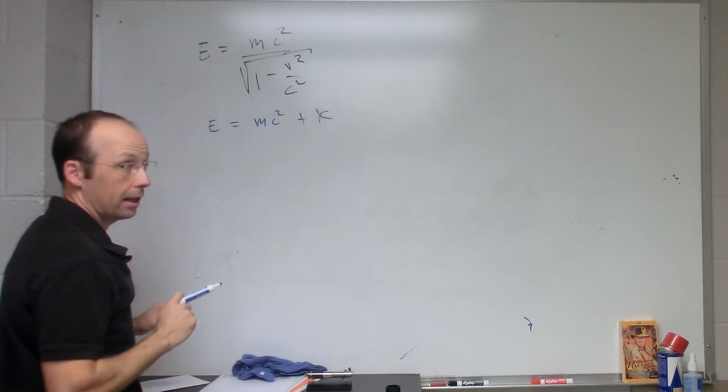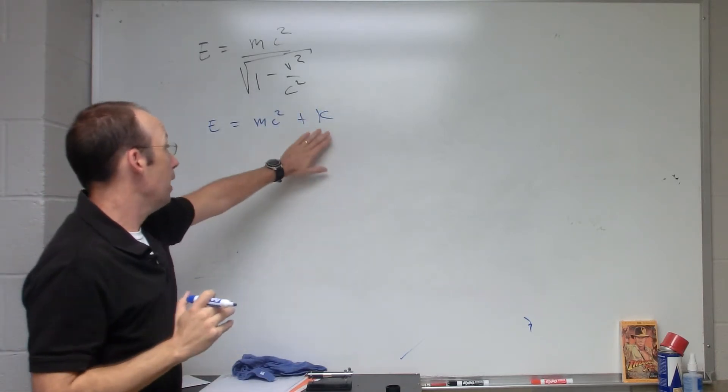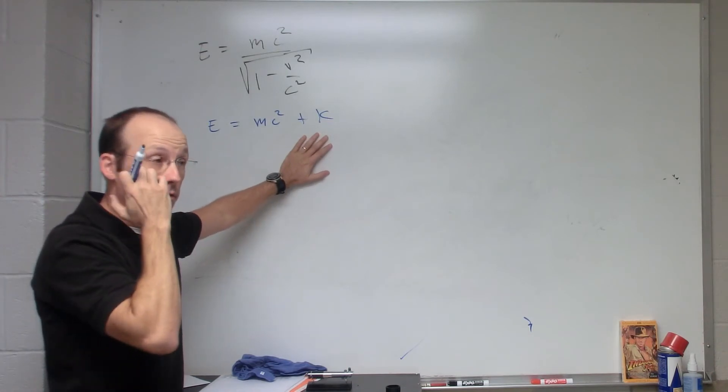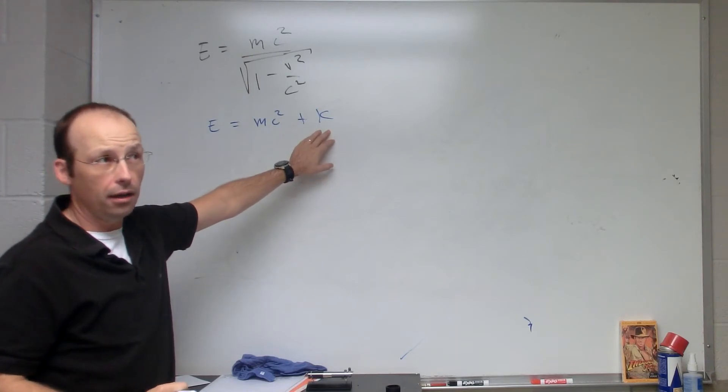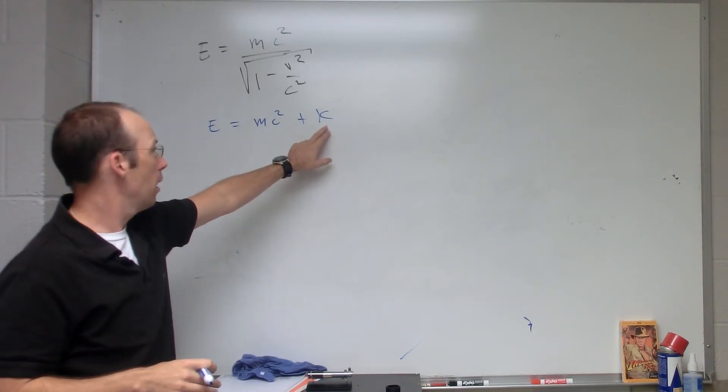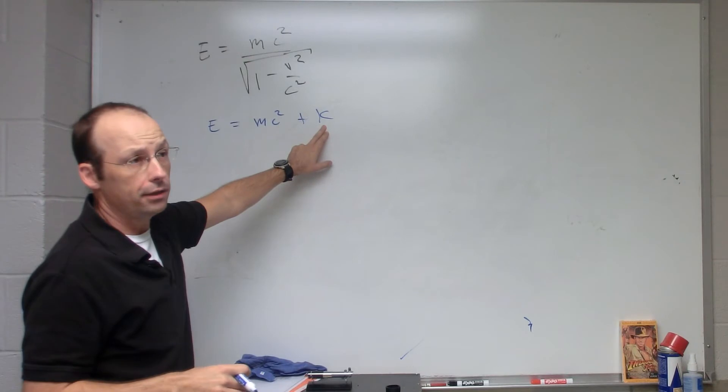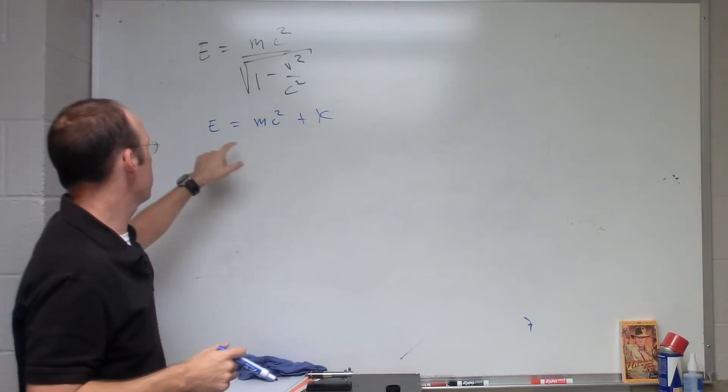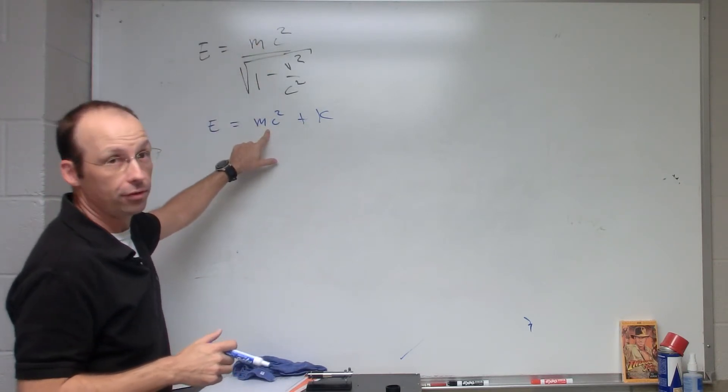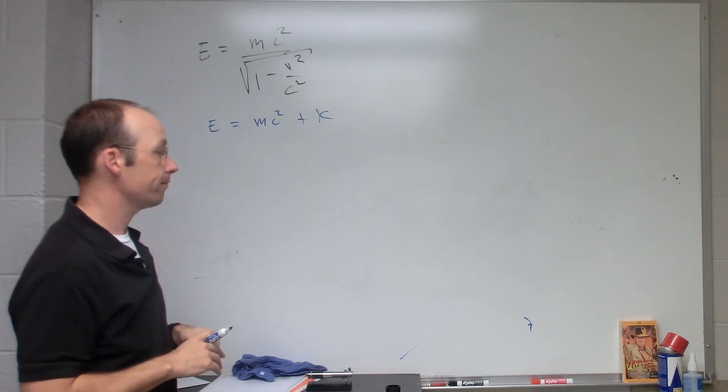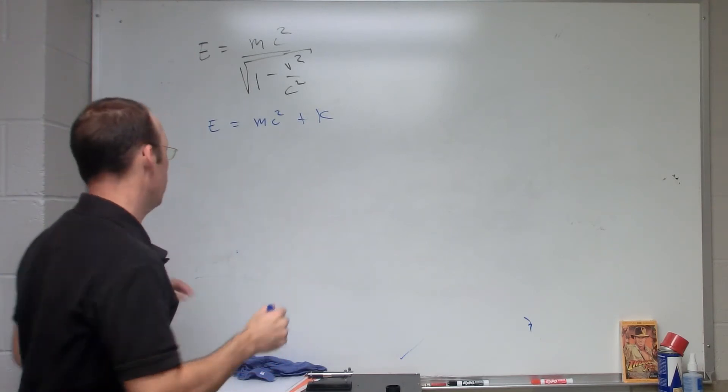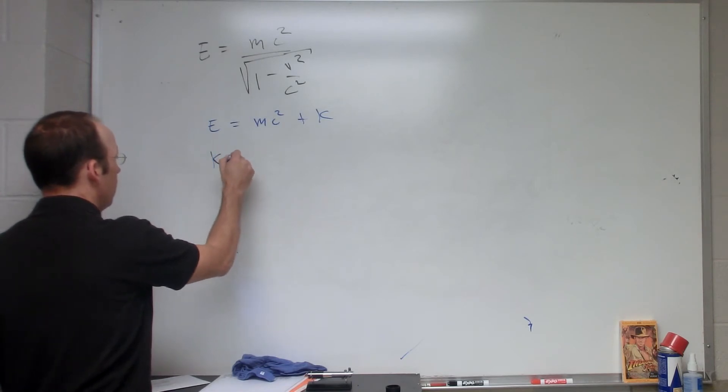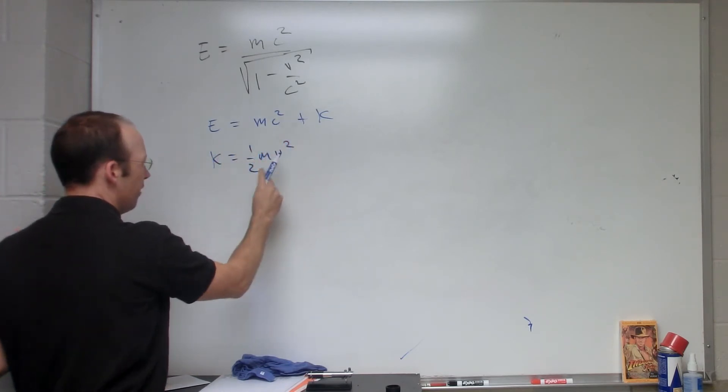Now if the particle's going near the speed of light, you can't say a simple value for K. If you want to find kinetic energy you would take this whole thing minus mc squared. If it's moving relatively slow compared to the speed of light, then you can say K equals one-half mv squared. This is really the magnitude of the velocity squared.